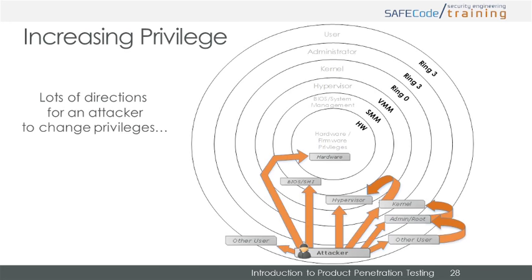To understand privilege escalation, you first need to understand how privileges work. Take, for example, the different privileges within an operating system. They are organized into rings of trust, with the innermost rings possessing the highest levels of access. We begin at the outermost level at ring 3, which is the space in which a user interacts with software running on top of the operating system. The rings then progress inward to the kernel level ring 0, VMM hypervisors, SMM BIOS, and down into the level that interacts with the hardware directly. Another example of privilege escalation could be a simple escalation from a process to a service, or from a regular user to an admin user.